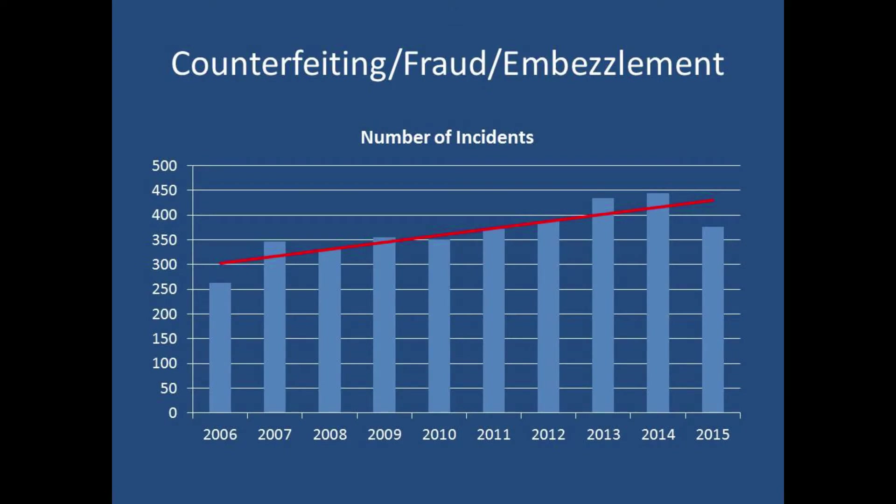Counterfeiting had been trending upward but fell off a bit in 2015. Counterfeiting has just taken off — not only in Danville but statewide and nationally. The most counterfeited bill is the hundred dollar bill, with twenties occasionally as well. Last year in 2015, we made an arrest in one case where one person was responsible for a significant number of the counterfeit bills being passed in the city. By arresting him and taking him out of the business, we saw a significant drop in cases. However, the quality of computer printers out there means there's no reason to believe it will decrease on its own.